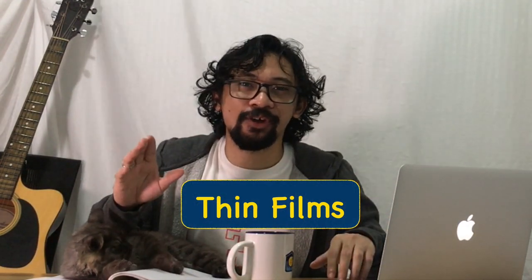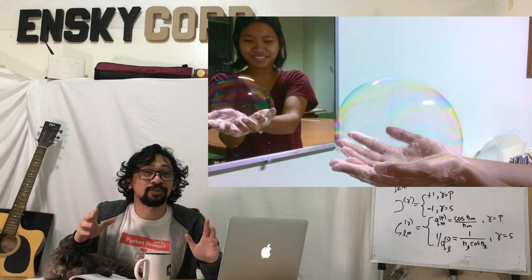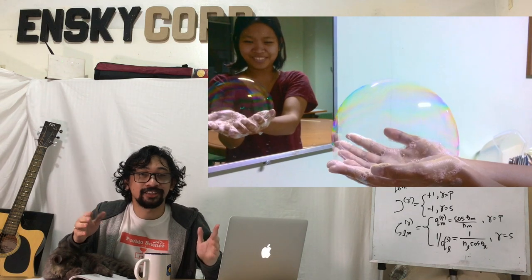Thin films are everywhere. We can see them in the bubbles we make while we wash our dishes, they are on our eyeglasses, and this computer—definitely its electrical components have thin films on it.